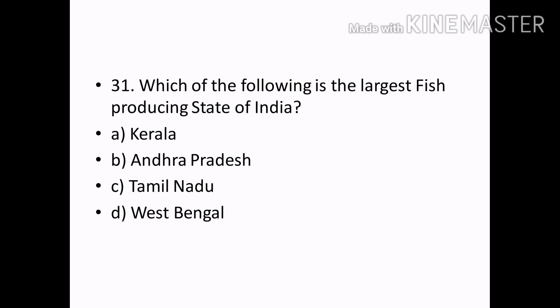Which of the following is the largest fish producing state in India? Options — Kerala, Andhra Pradesh, Tamil Nadu, West Bengal. Correct answer: Option D — West Bengal.